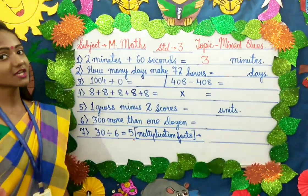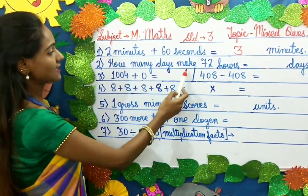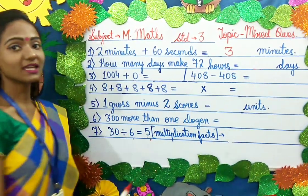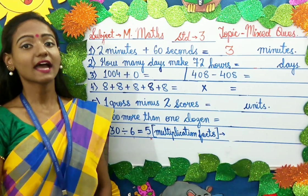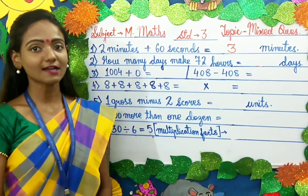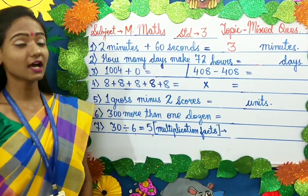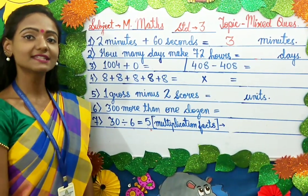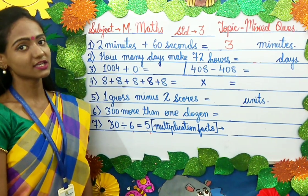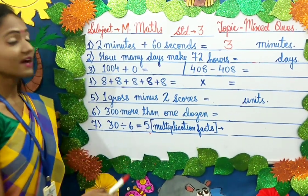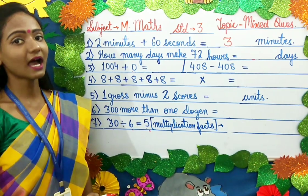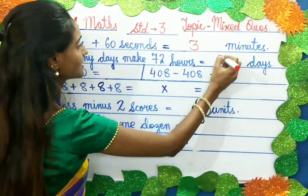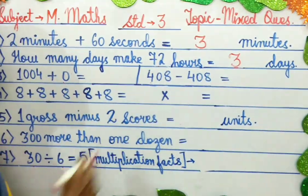Moving on to the second question: How many days make 72 hours? As we know, 24 hours make 1 day. So to find out how many days make 72 hours, we will divide 72 by 24. After dividing, we get the answer 3 days. So 3 days make 72 hours.